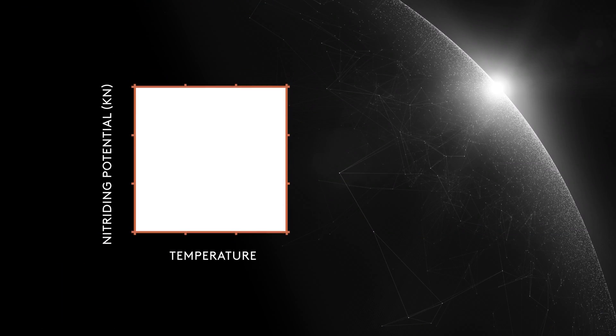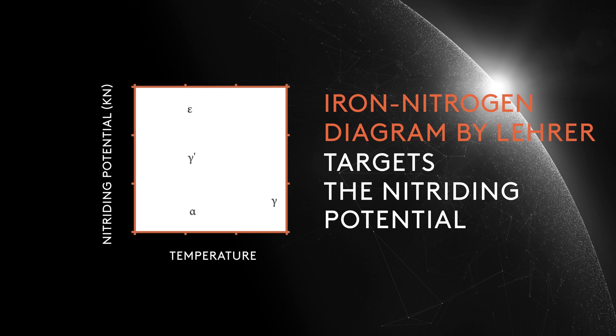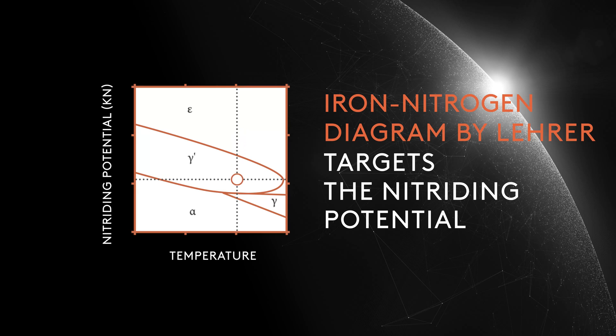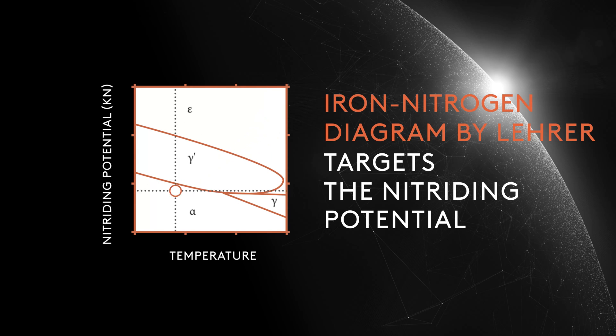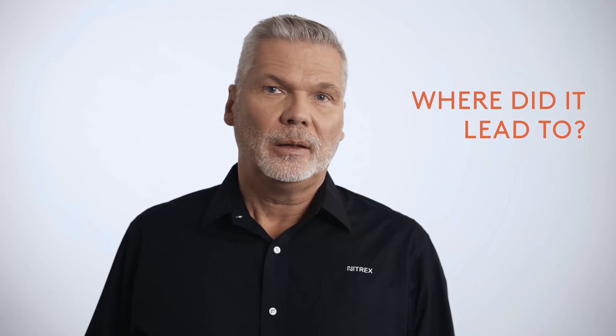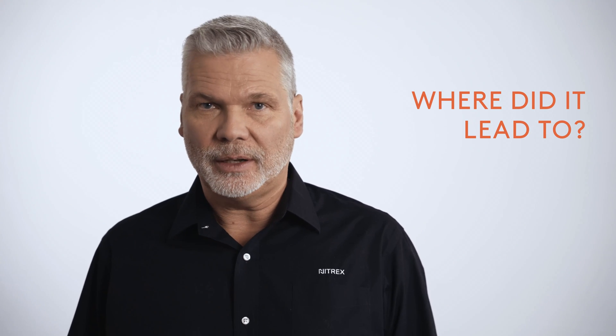A major breakthrough allowed process control using nitriding potential. The latter iron-nitrogen diagram was modified to incorporate curves representing constant nitrogen concentration in iron as a function of temperature and nitriding potential. This new diagram was further modified to account for shifts that happen because of the alloying elements. Now not only can we target the nitriding potential at any given temperature, but you can also predict the result in terms of microstructure and hardness.